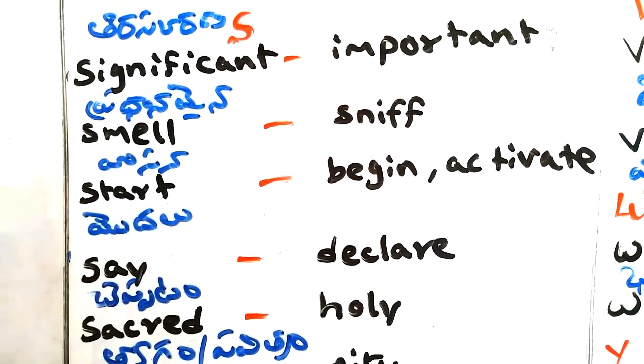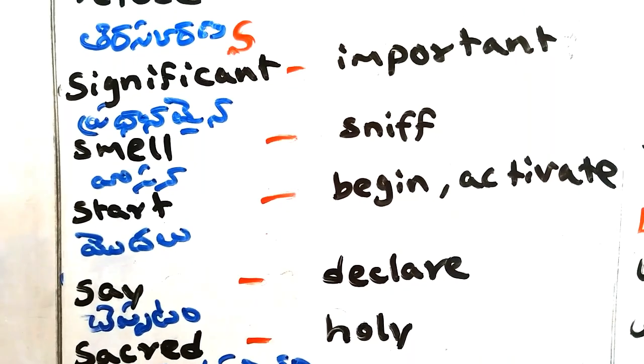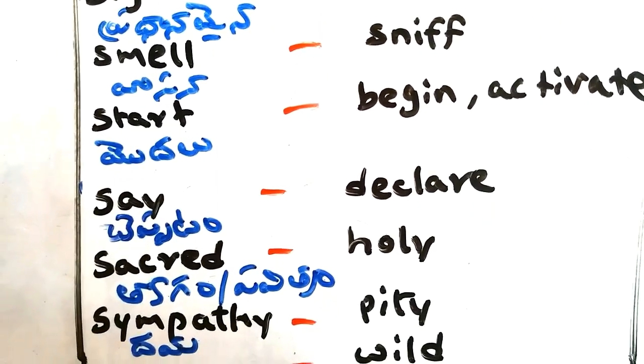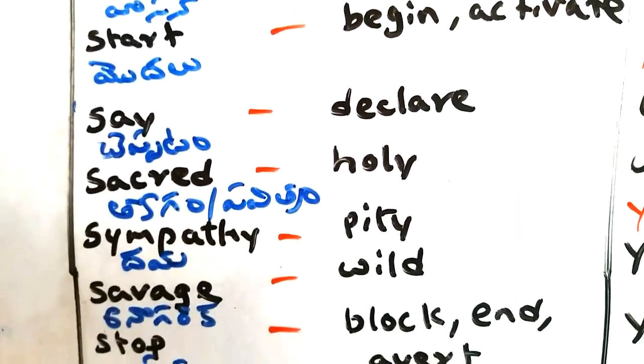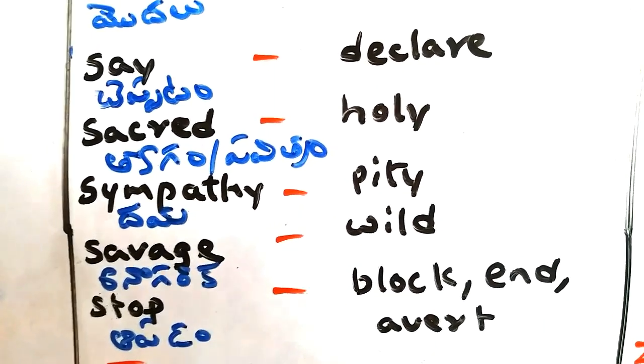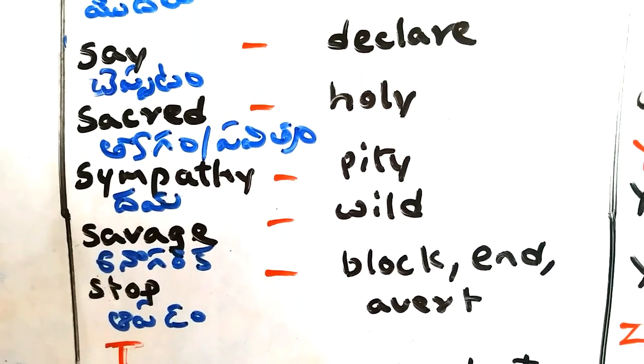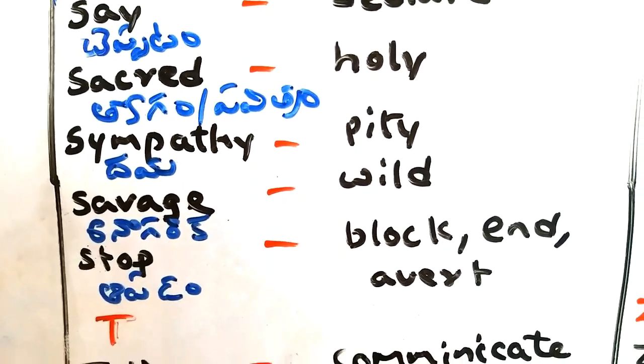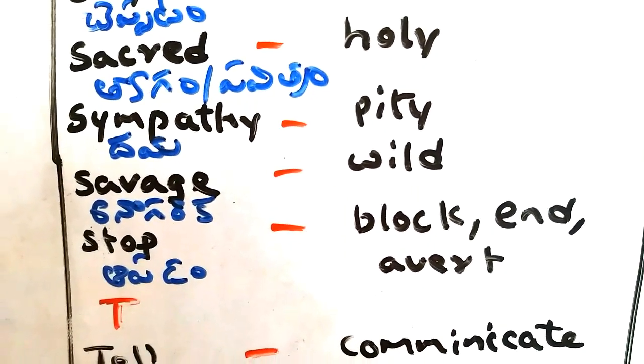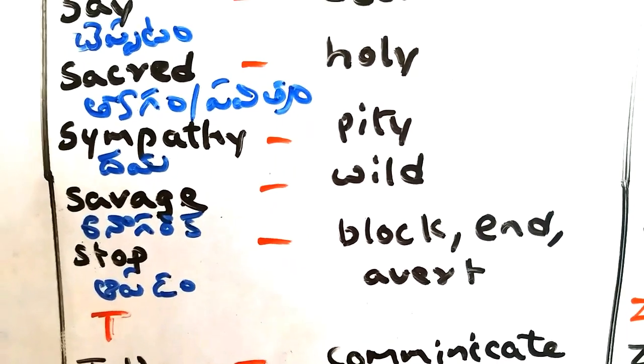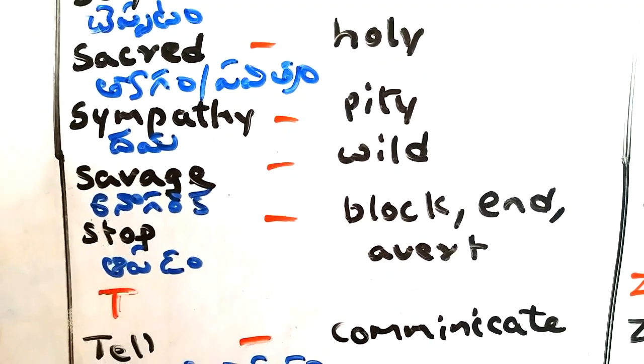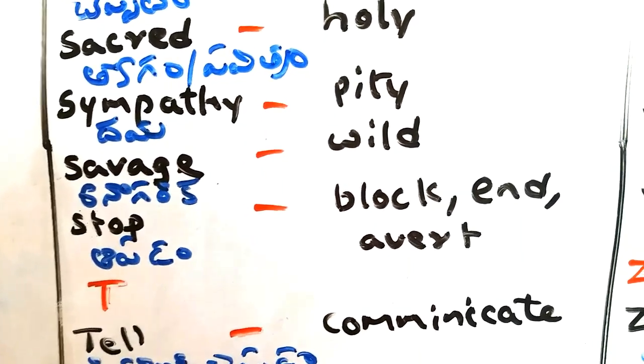Start - modal, begin, activate. Say - chepadam, declare. Sacred - holy, chagam, pavitram. Sympathy - daya, pity. Savage - anagirika, wild. Stop - operam, block, end, avat.